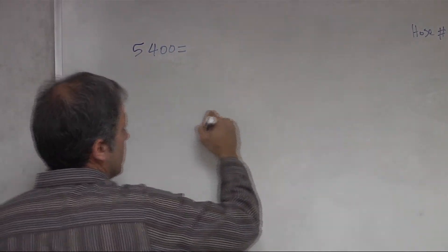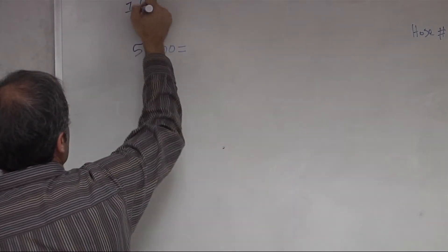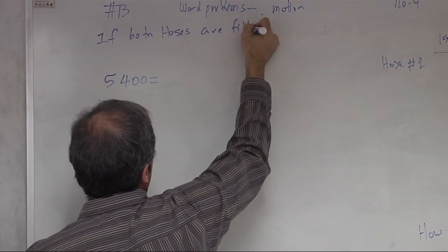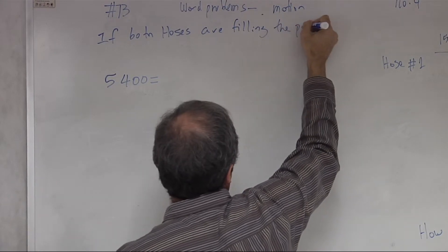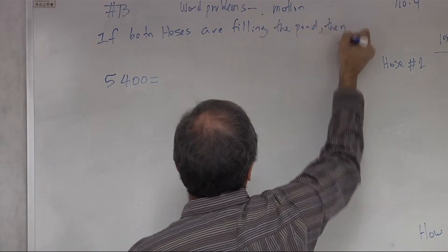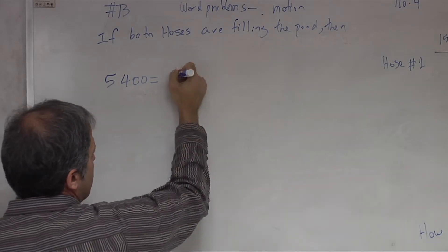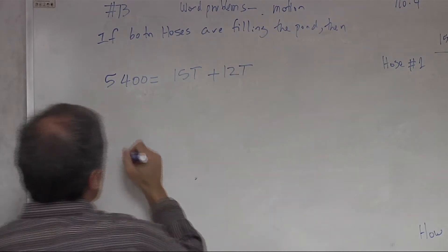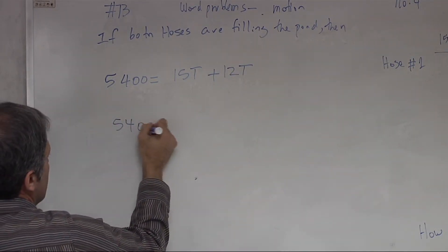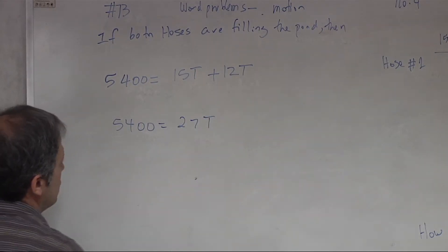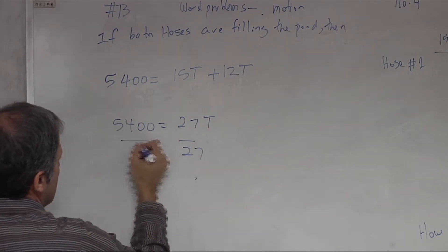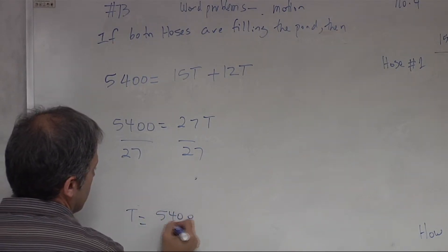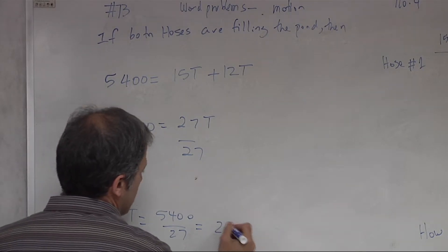So this time, 5,400 is equal to - so now if both hoses are filling the pond, then that would be 5,400 equal to 15t plus 12t, which is 5,400 equal to 27t. And divide by 27, so t is equal to 5,400 divided by 27, which is equal to 200 minutes.